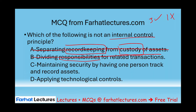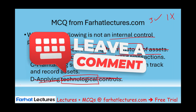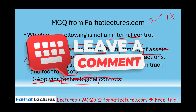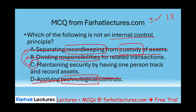Now we're down to two options. Is it 'maintaining security by having one person track and record assets,' or 'applying technological controls'? Applying technological controls is an internal control principle — especially important these days since everything is driven by technology, so take that out. The answer is C — having one person track and record assets conflicts with both separating record keeping from custody and dividing responsibilities. You want a system of checks and balances.